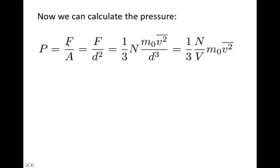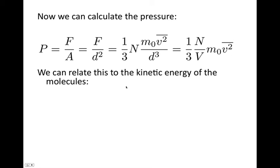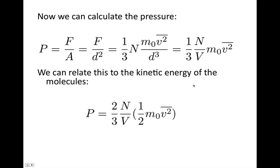Now we can calculate the pressure. Pressure equals force over area, and for a cube the area is d², so P = (1/3) × N × m₀ × V̄² / d³, which is (1/3) × (N/V) × m₀V̄². To relate this to kinetic energy — kinetic energy is ½m₀v² — we introduce a factor of ½ by also placing a 2 in the numerator, giving P = (2/3)(N/V) × ½m₀V̄². This term is the average kinetic energy of a molecule. This is also Boyle's law, since P is inversely proportional to V.